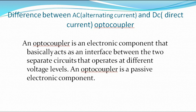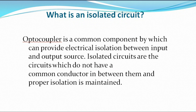An optocoupler is an electronic component that basically acts as an interface between two separate circuits that operate at different voltage levels. An optocoupler is a passive electronic component. What is an isolated circuit? An optocoupler is a common component which can provide electrical isolation between input and output source. Isolated circuits are circuits which do not have a common conductor in between them, and proper isolation is maintained.